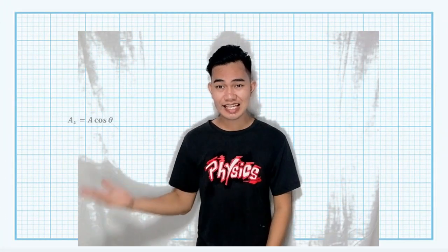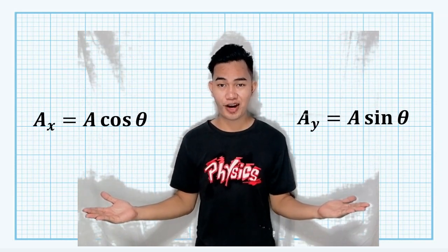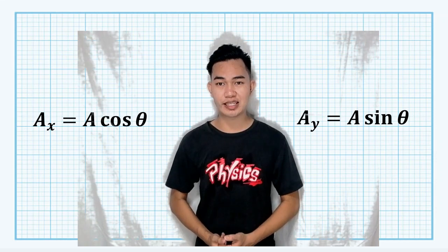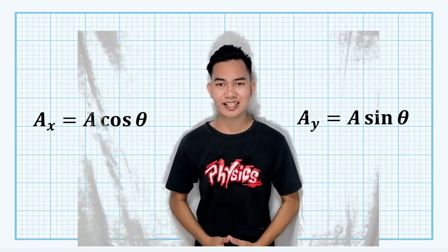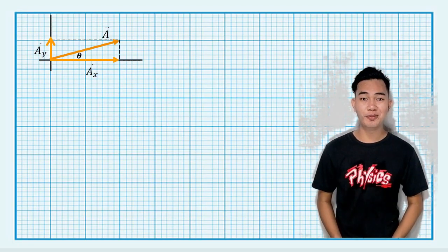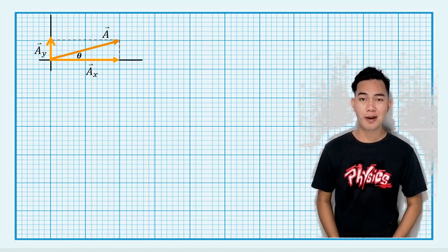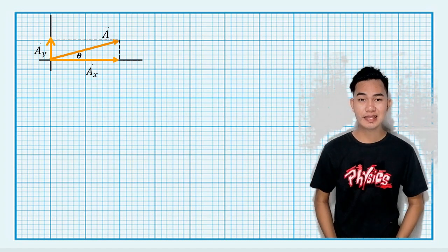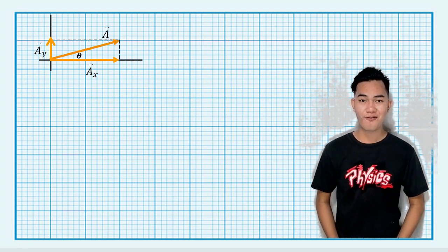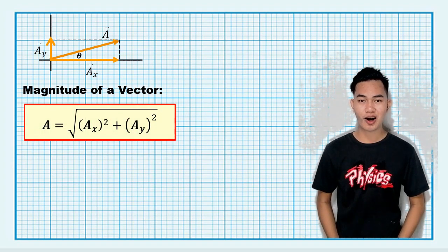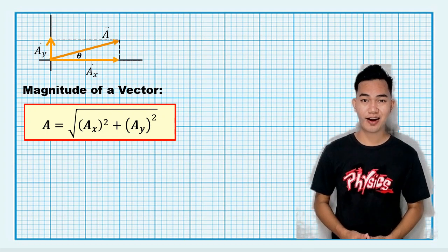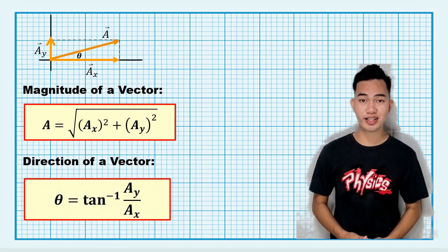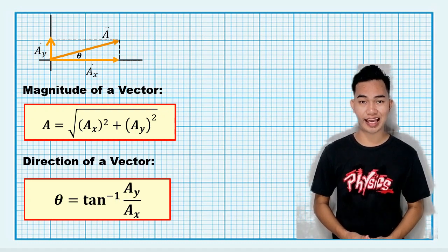But take note: these equations are correct and valid for any angle from 0 to 360 degrees, provided that the angle is measured counterclockwise from the positive x-axis. We can also describe a vector completely given its magnitude and direction. By applying the Pythagorean theorem to determine the magnitude of a vector, we get vector A equals the square root of A sub x squared plus A sub y squared. And to find the direction of a vector, we have theta equals tangent inverse of vector A sub y over vector A sub x.